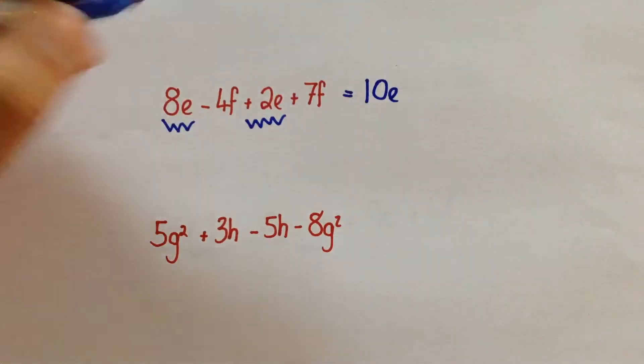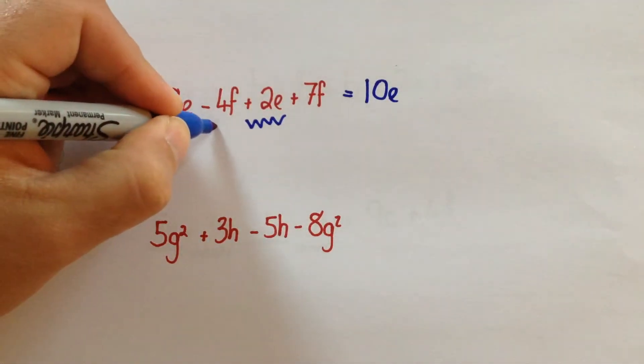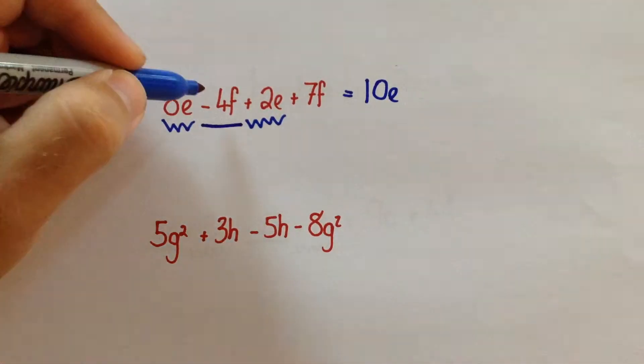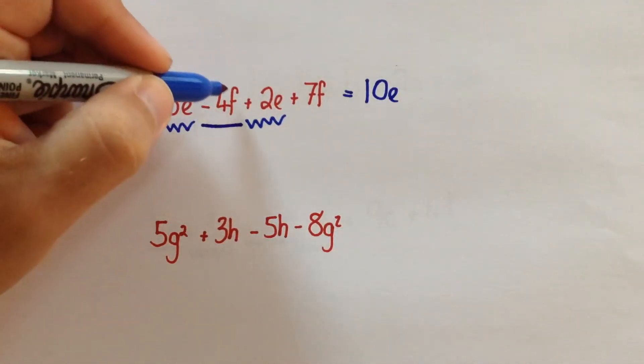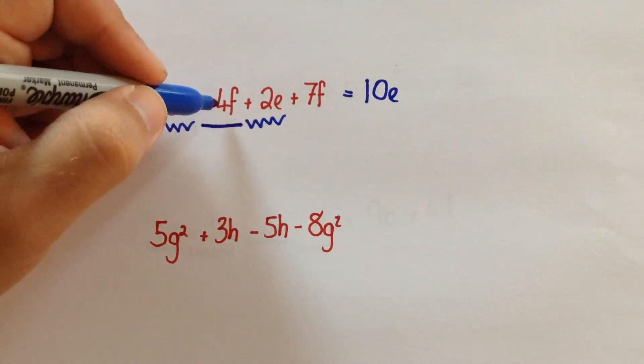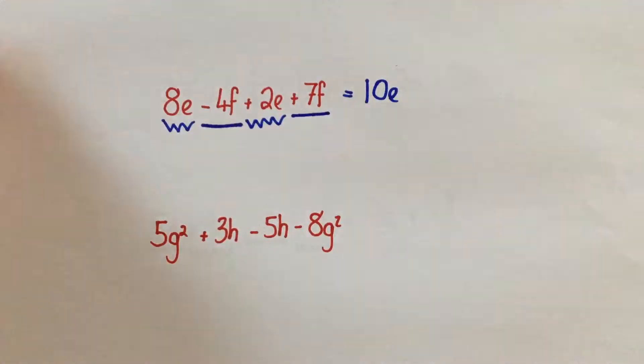Moving on to the F's. Here, we've got minus 4F. So if you imagine a number line, and we start on minus 4, we would need to add on 7.